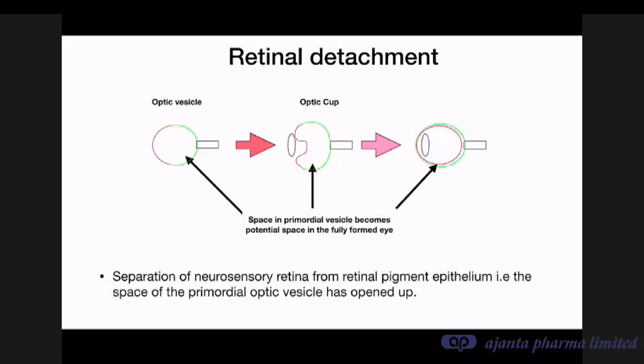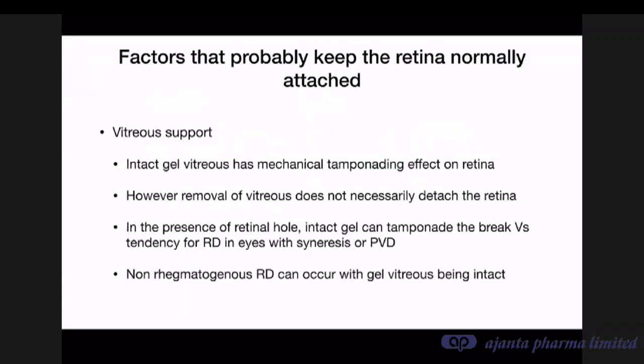The red line indicates the area that develops into the neurosensory retina, and the green line indicates the area of the optic vesicle that develops into retinal pigment epithelium. The space in between is ultimately compressed into the potential space that gets opened up in retinal detachment. Now, what are the factors that normally keep the retina attached to the retinal pigment epithelium?